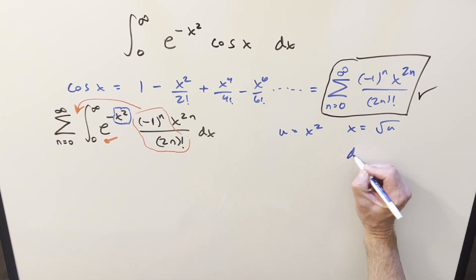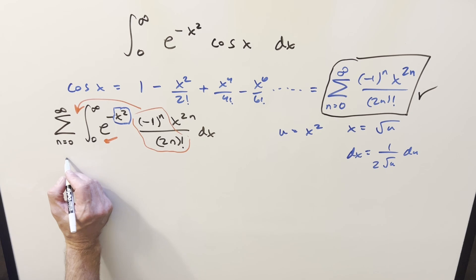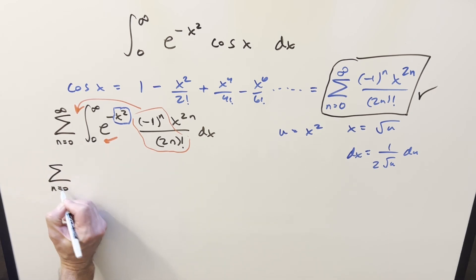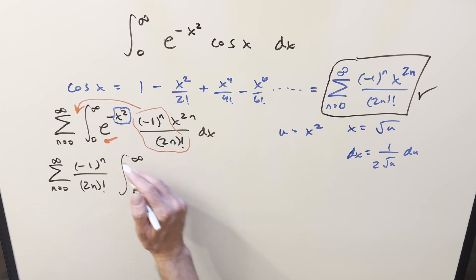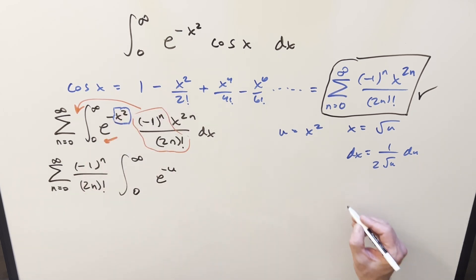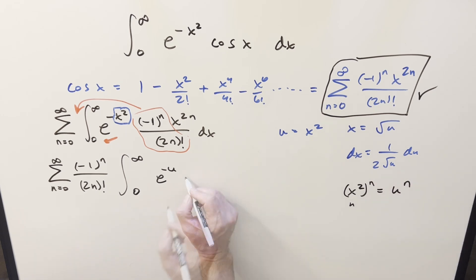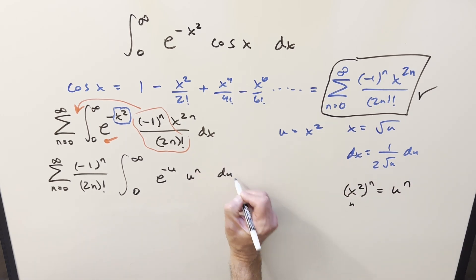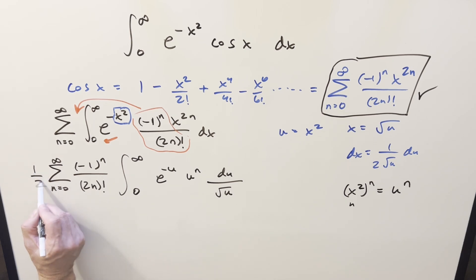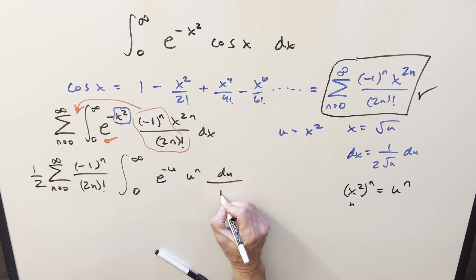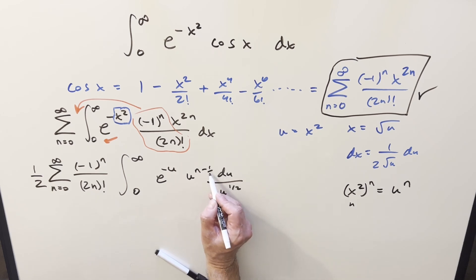Isolating x gives x = √u. Taking the derivative, dx = du / (2√u). Bringing the constant out, we plug in the bounds: infinity stays infinity, 0 stays 0. The integrand becomes e^(-u), and for x^(2n) we use exponent properties: (x²)^n = u^n. Writing du/√u as du/u^(1/2), we combine u^n and u^(-1/2) to get u^(n - 1/2).